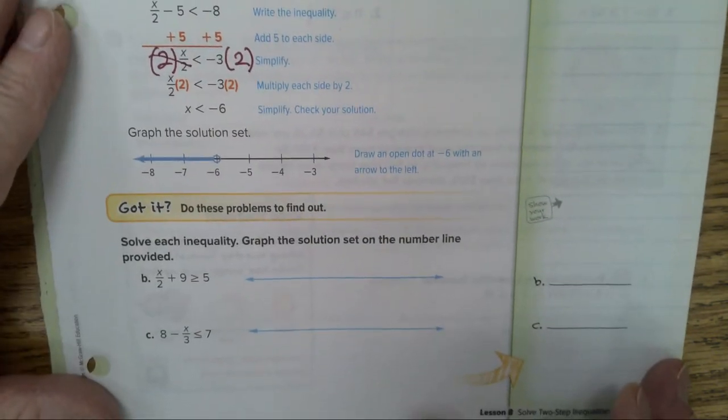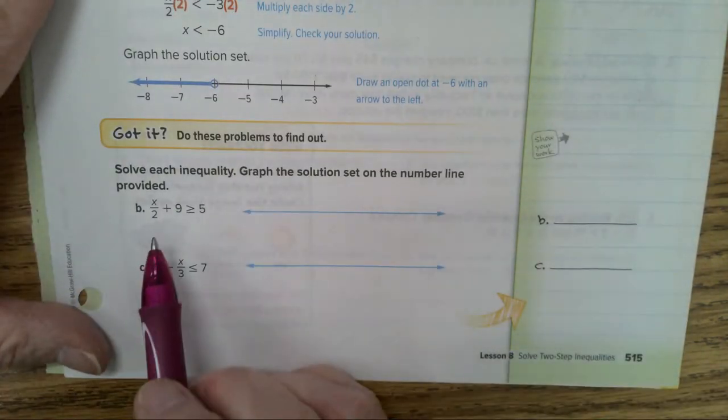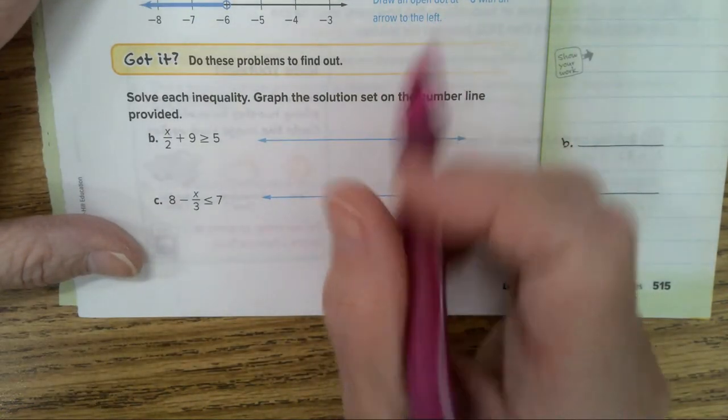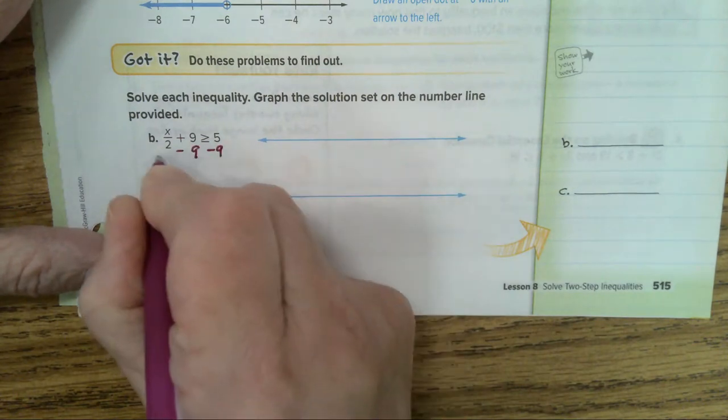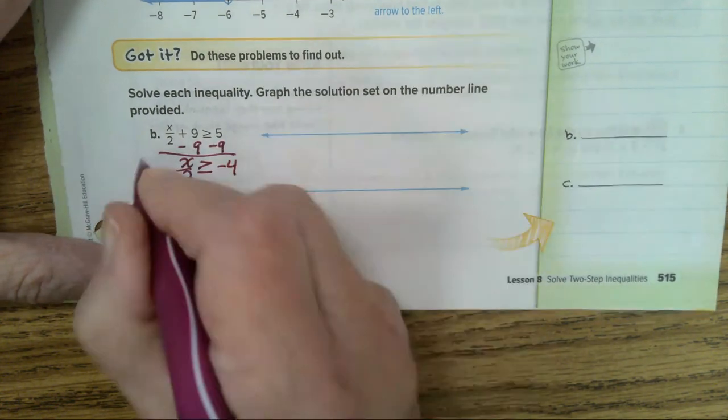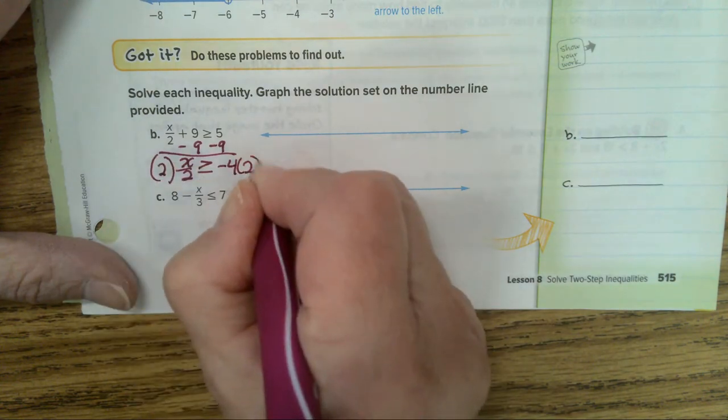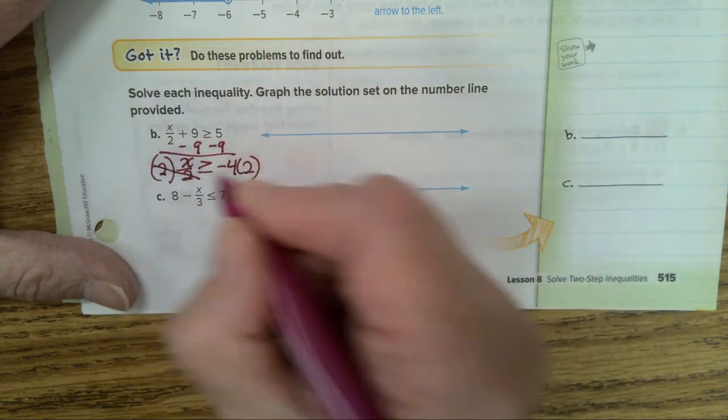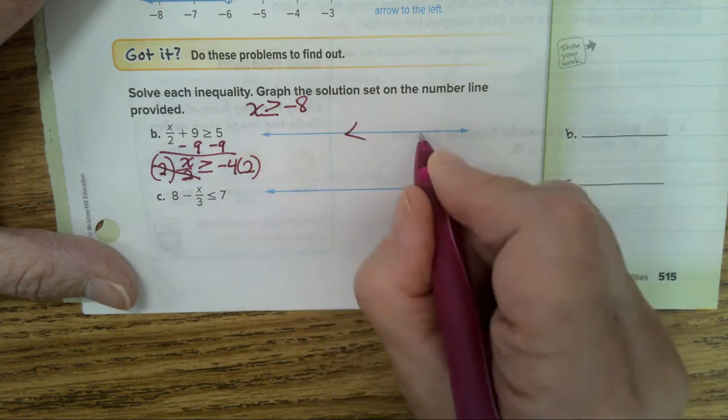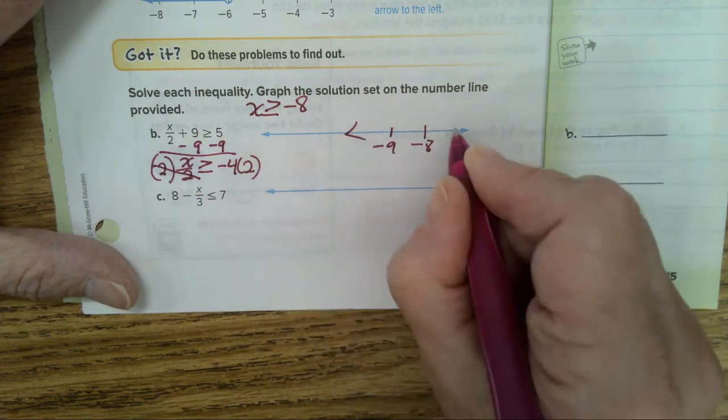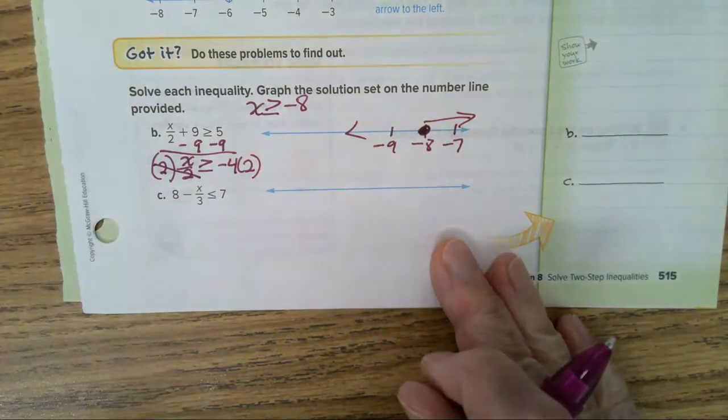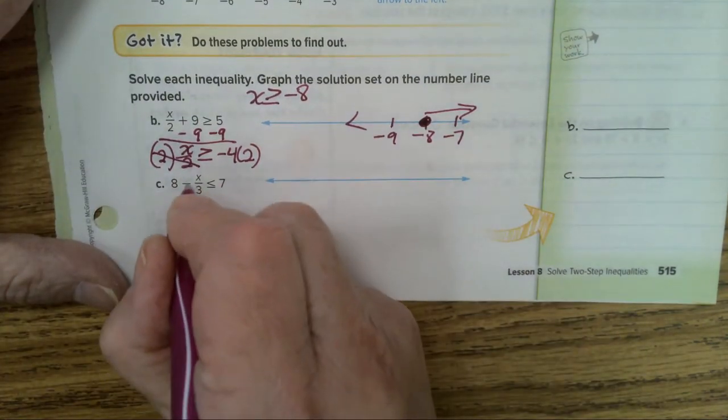Now I would like for you to do B and C. If you need more space, feel free to write your problems over here to the right. For this problem here, minus nine, minus nine, x divided by two is greater than or equal to negative four. Multiply by two, multiply by two, and the answer is going to be x is greater than or equal to negative eight. So negative eight, negative nine, negative seven, closed circle going to the right.